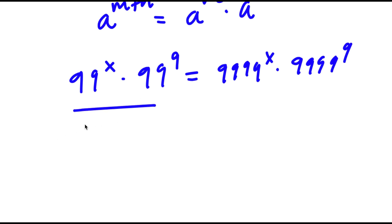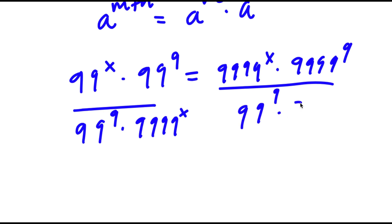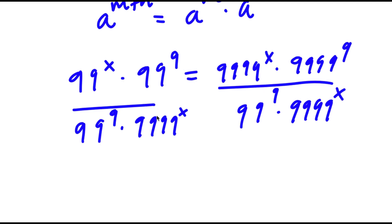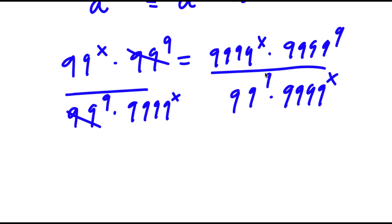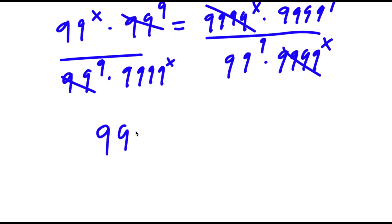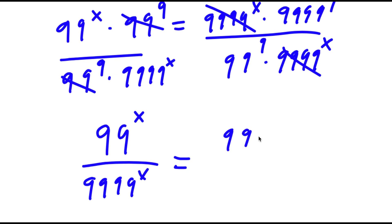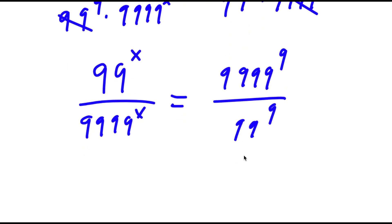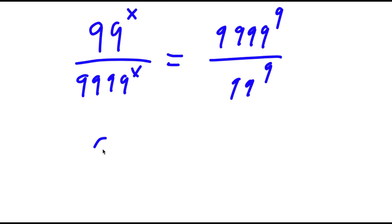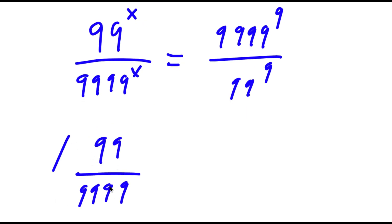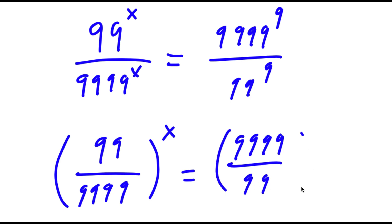Now I'm going to divide both sides by 99 to the power of 9 times 9,999 to the power of x. These two cancel out from the left-hand side, and these two cancel out from the right-hand side. So now I have 99 to the power of x over 9,999 to the power of x is equal to 9,999 to the power of 9 over 99 to the power of 9. This is the same thing as 99 over 9,999 to the power of x equals 9,999 over 99 to the power of 9.